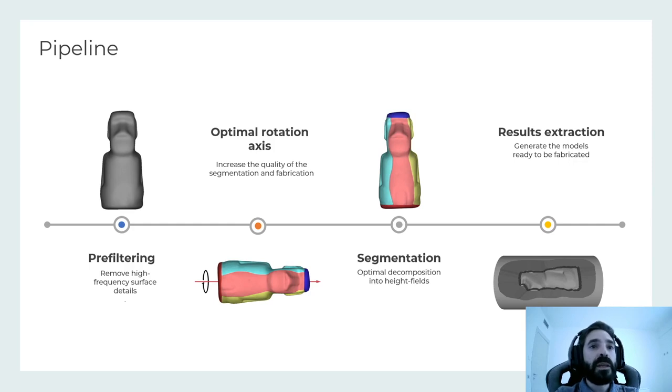The pipeline consists of four main steps. First, we perform pre-filtering that removes high-frequency details from the target model. Then, we find an optimal rotation axis on which the block will be secured on the rotation shaft, partitioning the mesh into three distinct regions. The choice of the axis has a huge effect on the surface decomposition into height fields. Finally, we generate the models to be fabricated that can be processed by any off-the-shelf software for 3-axis CNC machines.